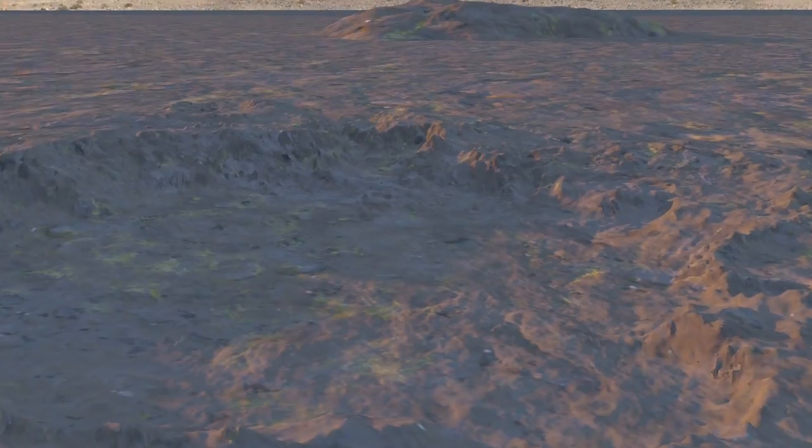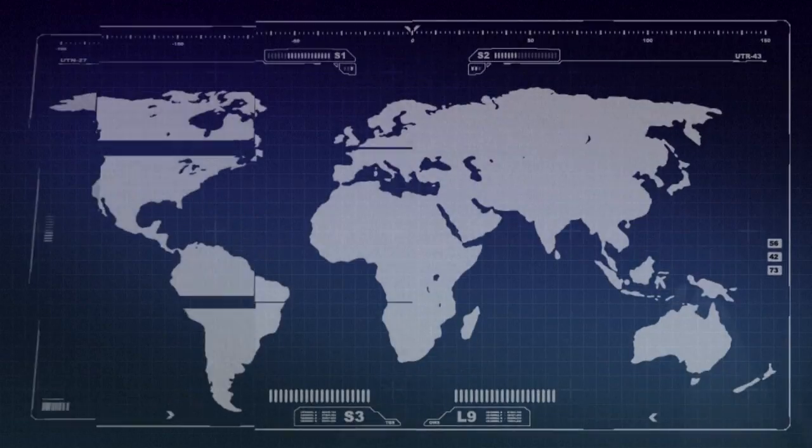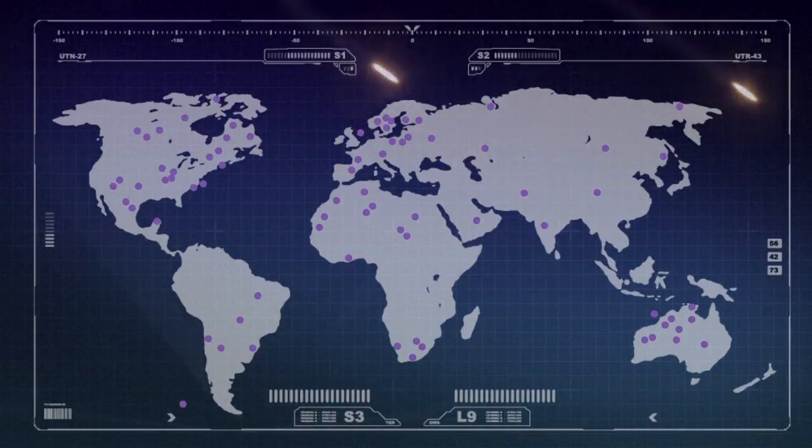There are 190 craters more than 50 meters wide visible on the Earth's surface. Around 5,000 meteorites weighing more than one kilogram crash down every year, but it's very rare to see one actually falling.